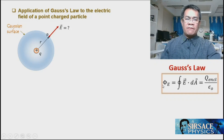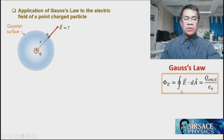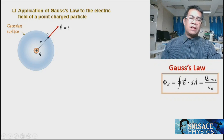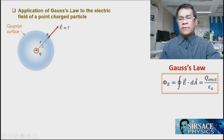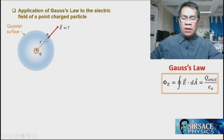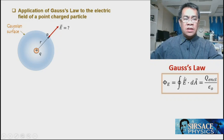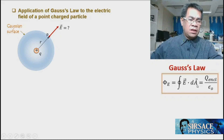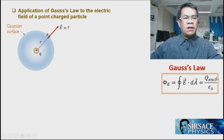According to Gauss's Law, the total electric flux equals the total enclosed charge divided by permittivity, which also equals the closed integral of E dot dA. We will find the electric field using this equation in terms of the electric field, the infinitesimal area, and the enclosed charge with the permittivity.